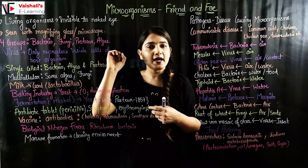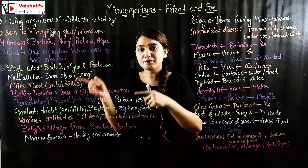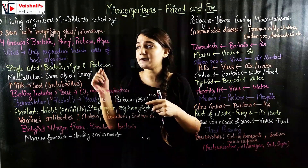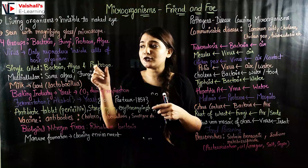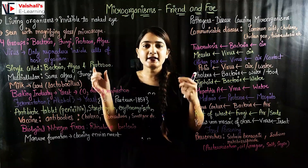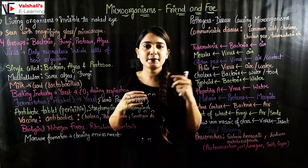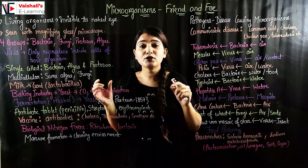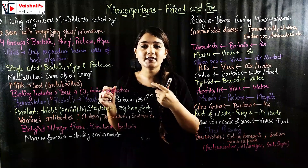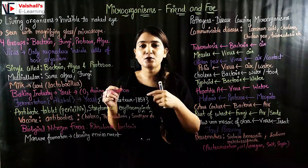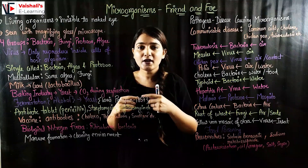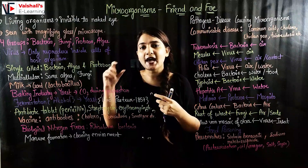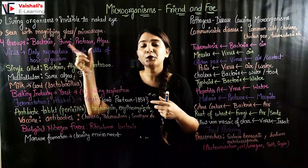We also have one more type of microorganism — virus. Virus is represented separately because it can only reproduce when it is inside a host cell. If it is separately present in the atmosphere, it cannot reproduce. It has the ability to reproduce only once it goes inside a person, animal, or plant — inside a living cell.